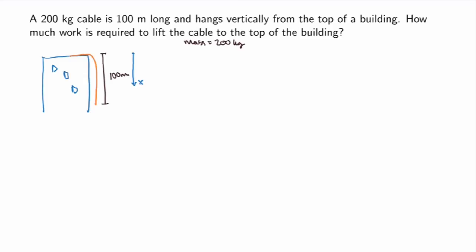The idea is the same as always: I'll slice the problem into manageable slices. Here, that means slicing the cable into small segments. I'll take a particular segment between xᵢ₋₁ and xᵢ, with each segment having equal length delta x. I'll calculate the work required to lift each segment to the top, assuming all points on a given segment are lifted by exactly the same distance xᵢ. This is an approximation, but sending the number of segments to infinity makes it precise.